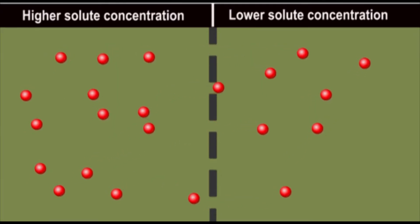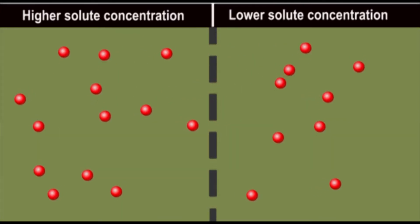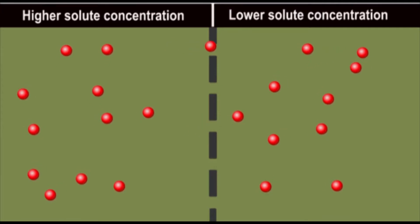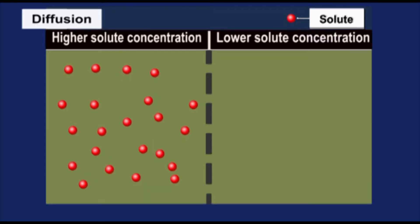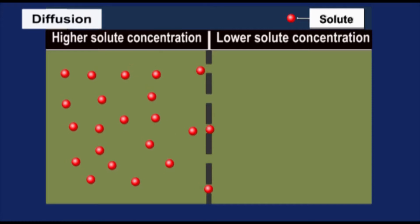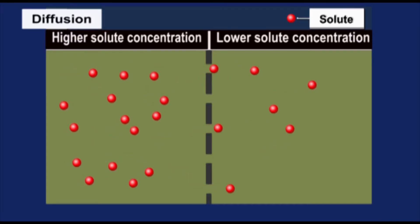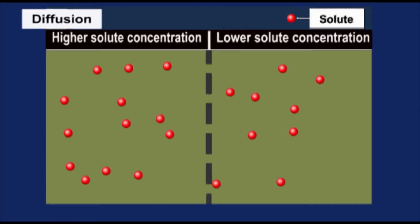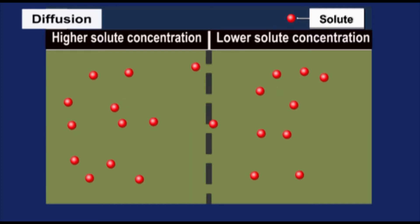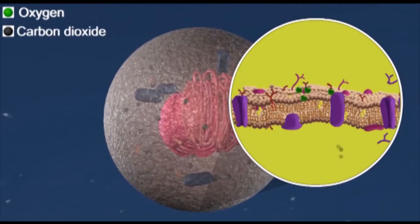There are different types of passive transport. One type of passive transport is diffusion. Diffusion is the movement of a substance from an area of high concentration to an area of low concentration. Diffusion doesn't require energy.